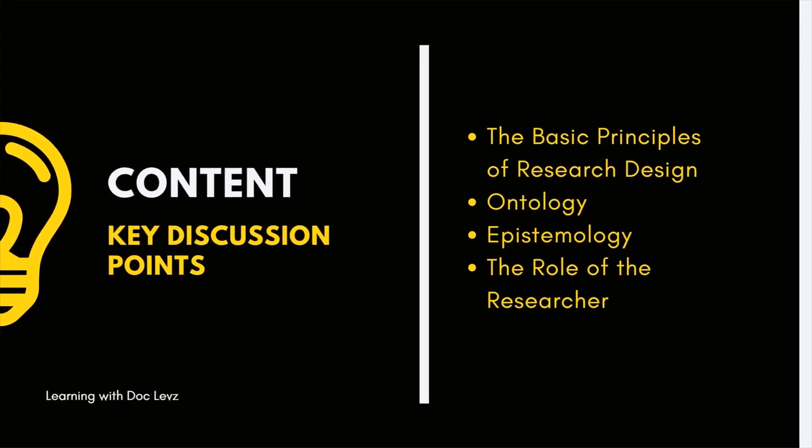We're going to talk about the following key topics. First is the basic principles of research design — what are the principles when you design research and what are the important philosophies you need to look into? Then we're going to talk about ontology, a very important area of philosophical study, and we're going to define it clearly and simply. We'll also talk about epistemology, and the role of you as the researcher — how you adjust based on your philosophical stance and how you want to answer the inquiry you want to conduct.